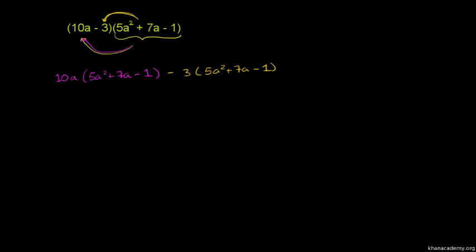And then we can simplify it. 10a times 5a squared, 10 times 5 is 50, a times a squared is a to the third. 10 times 7 is 70, a times a is a squared.